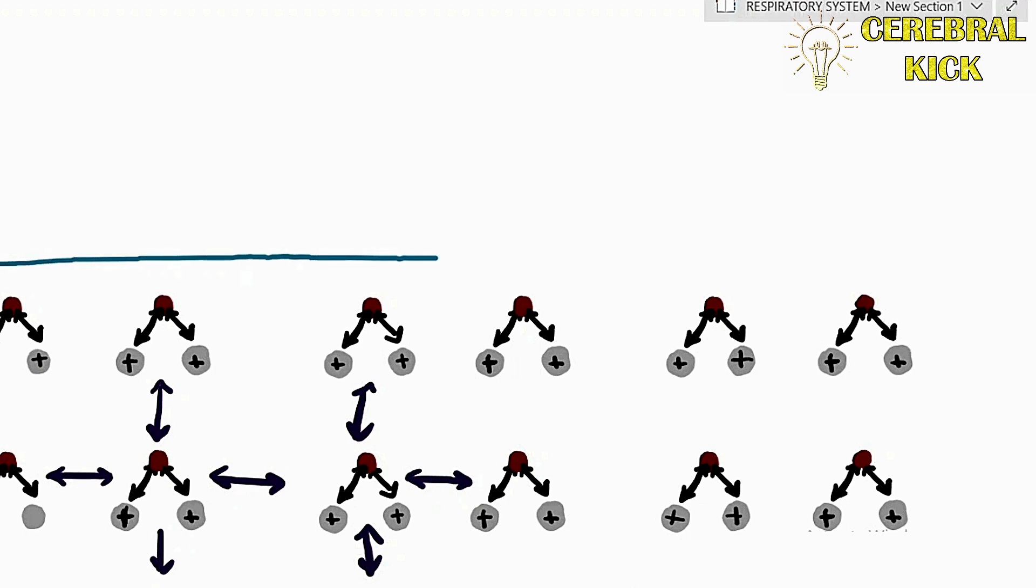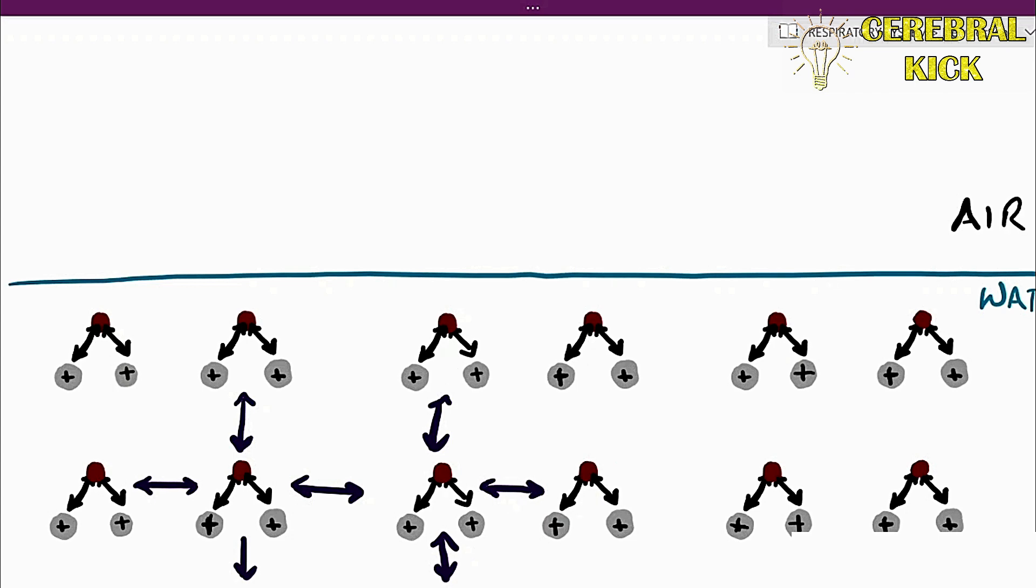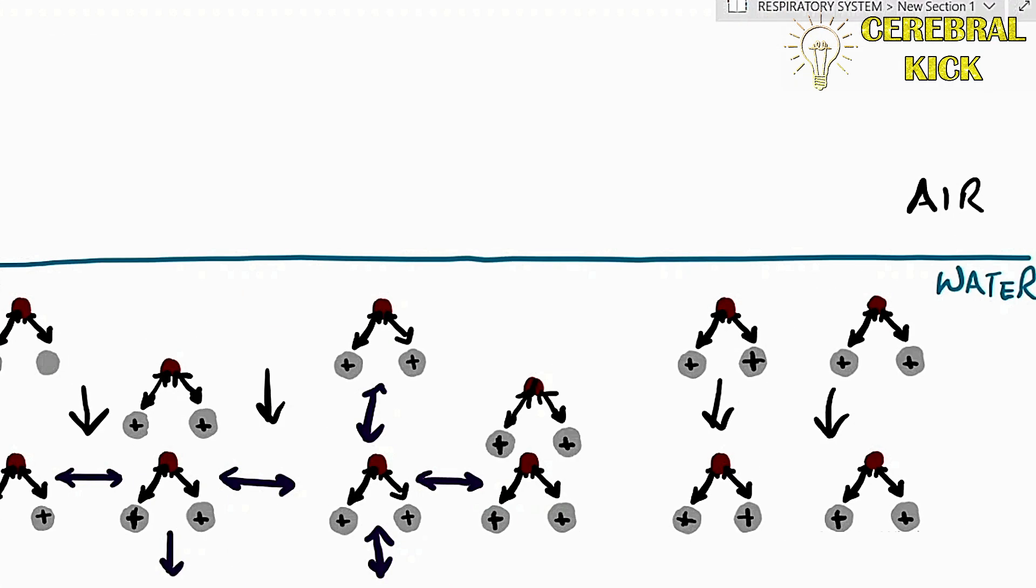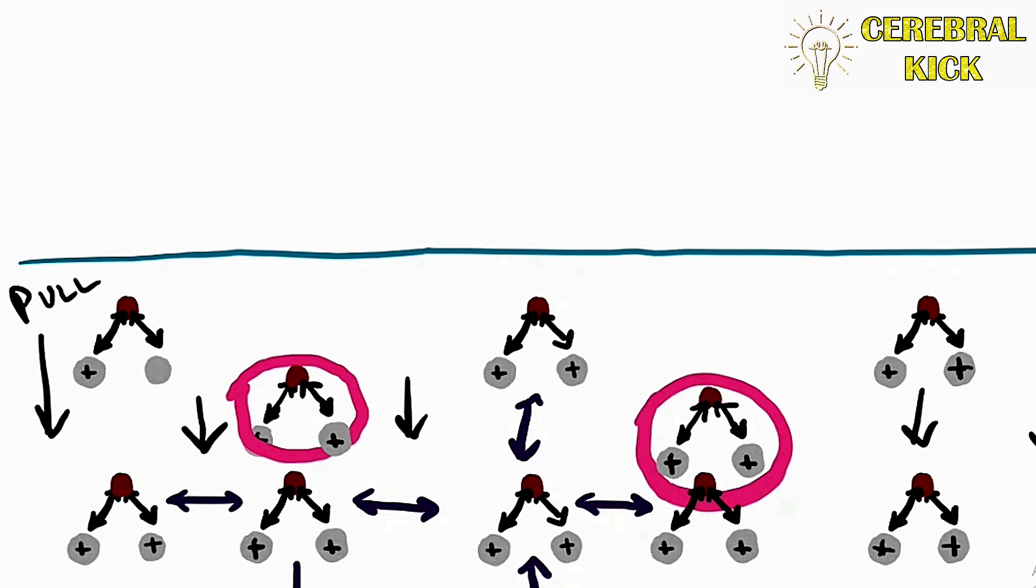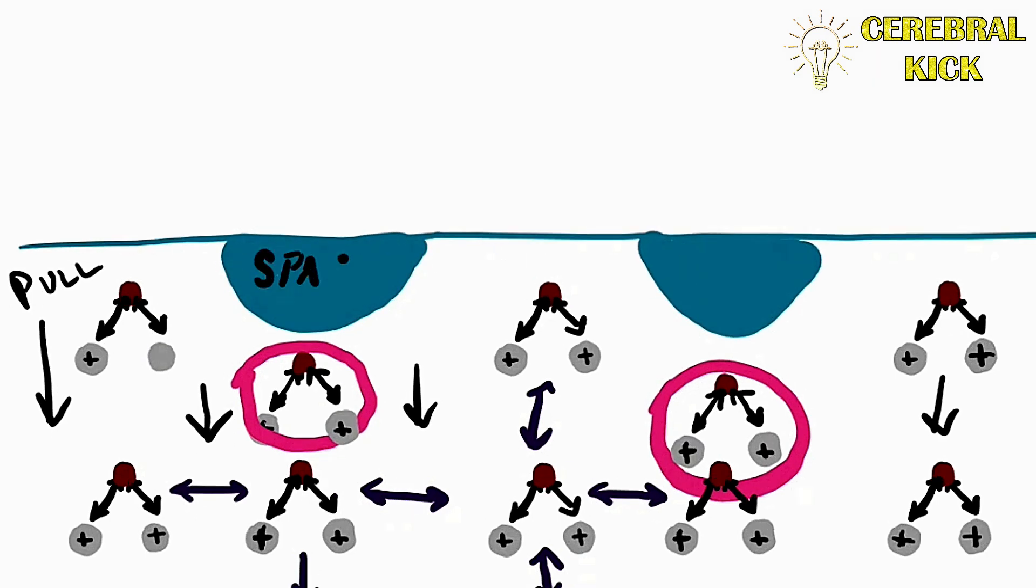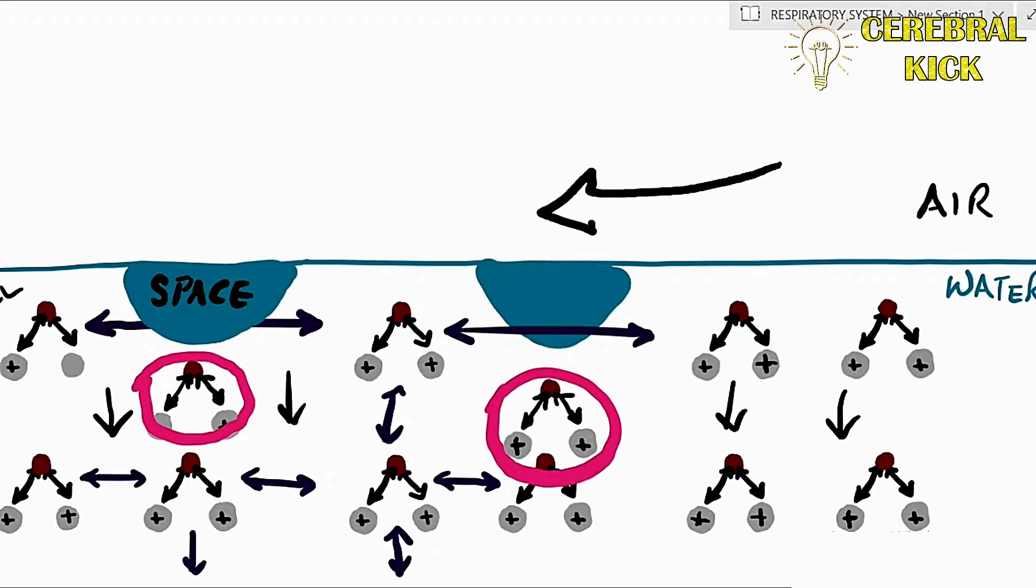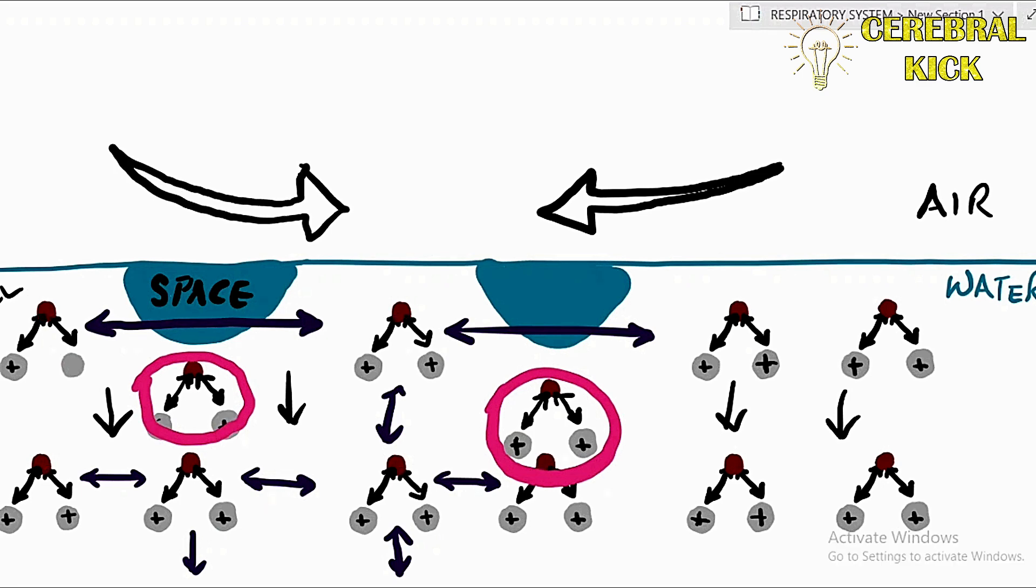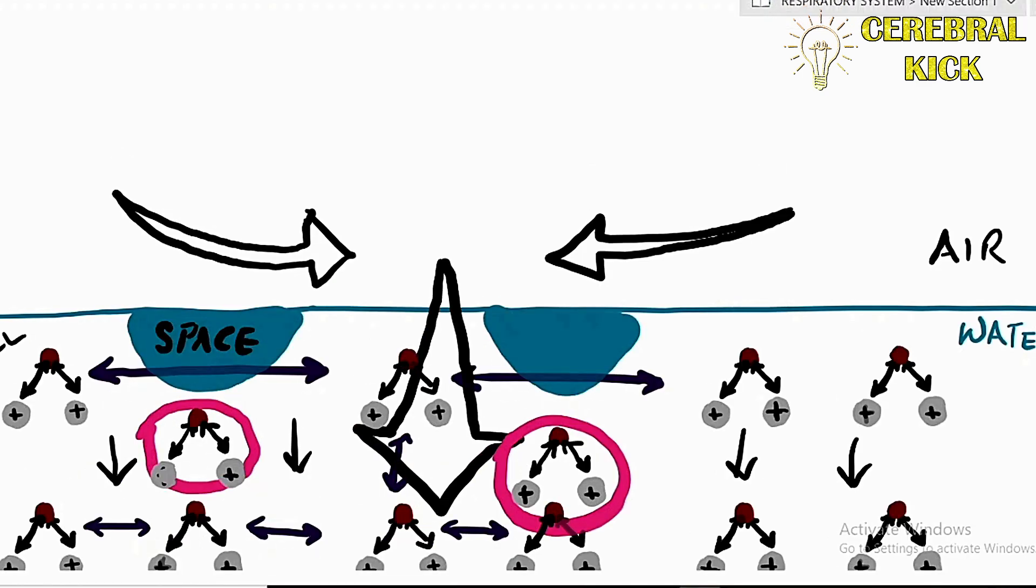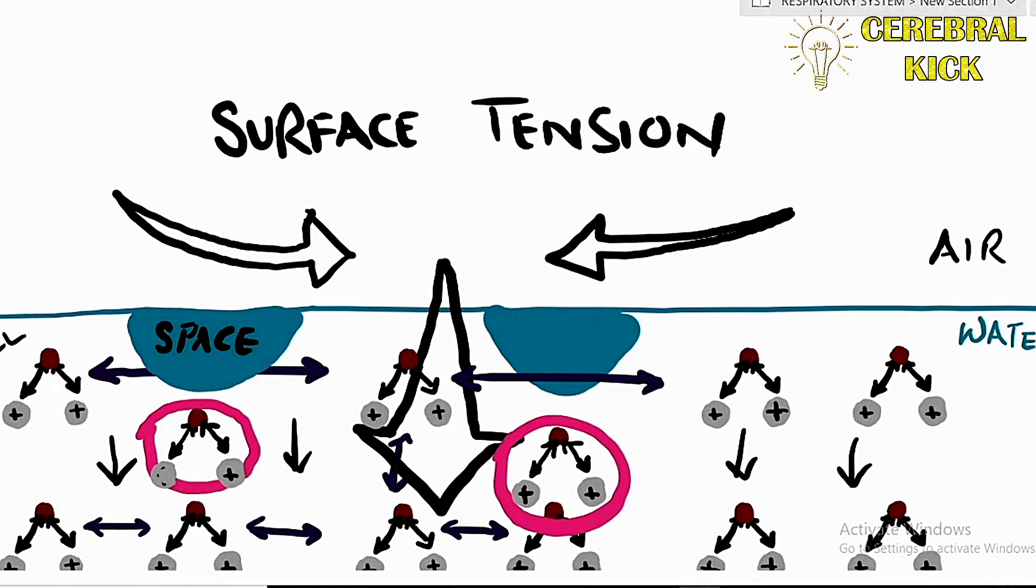But what happens when this water body interacts with the air? The molecules on the surface of the water will have more pull from the molecules inside the water body, but there won't be any opposing force from the opposite side. As a result, the molecules would be driven inside the water body, leaving a gap on the surface, which will automatically be filled up by the other surface molecules pulling onto each other. So the net force exerted by this water body is its tendency to move inwards and downwards.